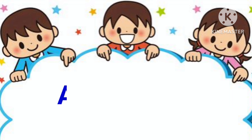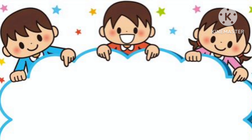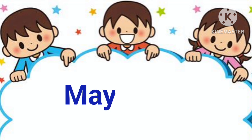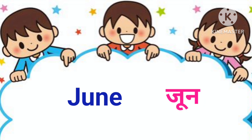April. April means April. May. May means May. June. June means June.